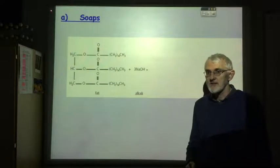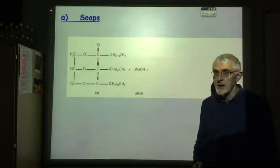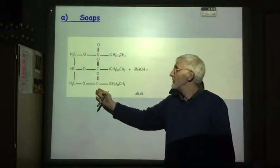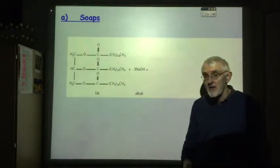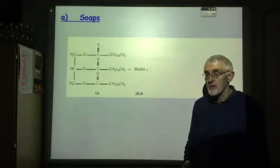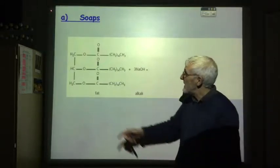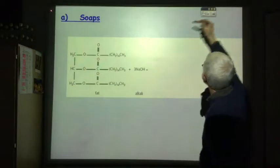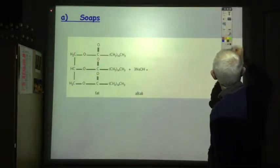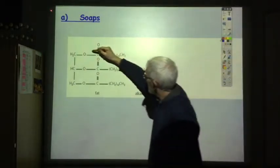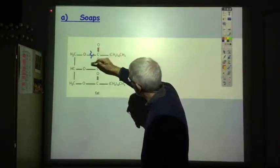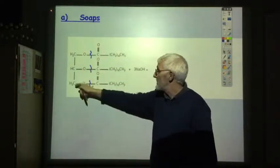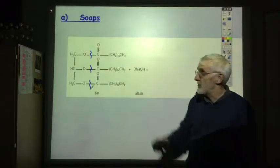The first thing we're going to consider is how would you make a soap? A soap is made by hydrolyzing a fat or oil. If you hydrolyze a fat or oil with an acid, you break the ester link, splitting the molecule here and here and here, making glycerol and three carboxylic acids.